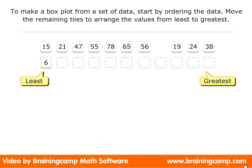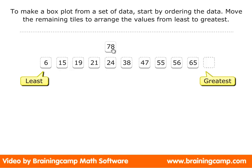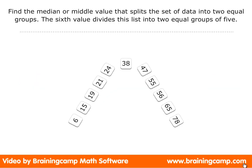To make a box plot from a set of data, start by ordering the data. Move the remaining tiles to arrange the values from least to greatest. Then find the median, or middle value, that splits the set of data into two equal groups. The sixth value divides this list into two equal groups of five.